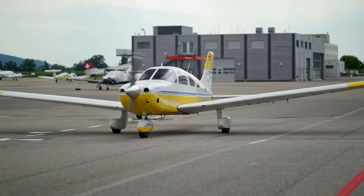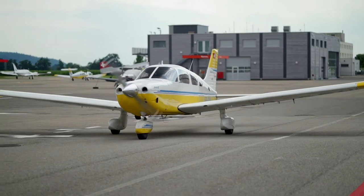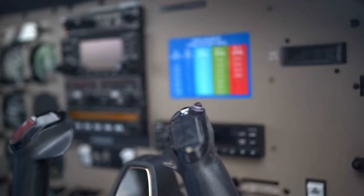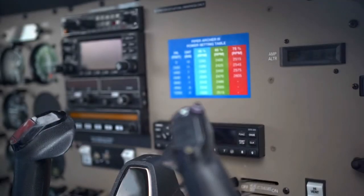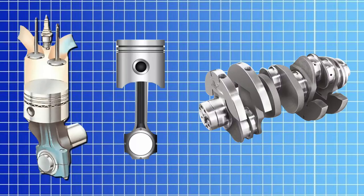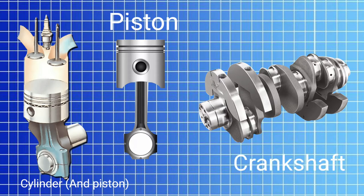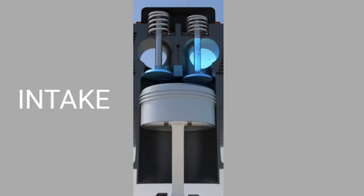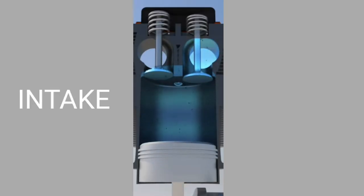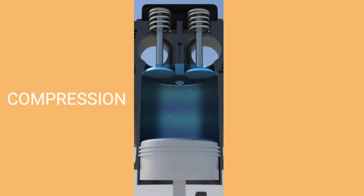The engine is the power plant of the aircraft, which means it supplies power to various systems of the aircraft. The reciprocating engine has many parts. In this video, we'll focus on the piston, the cylinder, and the crankshaft. The engine operates on a cycle of five functions.